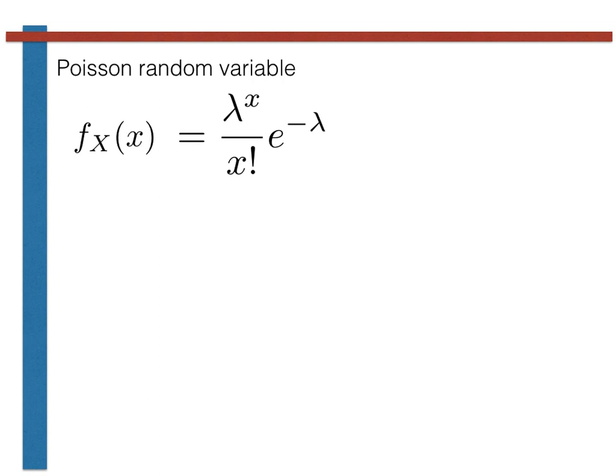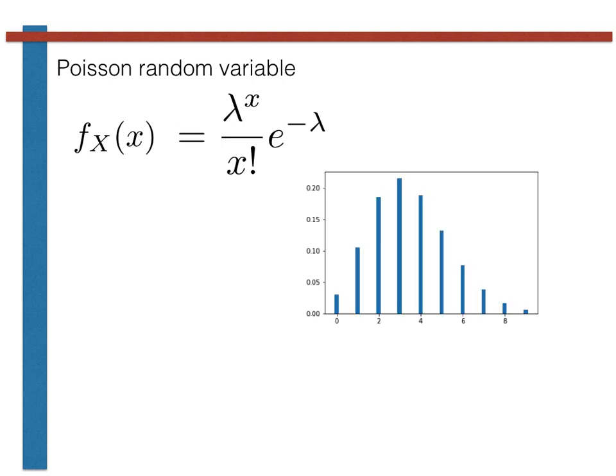If we draw the probability mass function on a bar chart, it would thus look something like this. Well, strictly speaking, it wouldn't look exactly like this, as the Poisson random variable can take any integer value from 0 up to infinity, so it is not possible to draw.